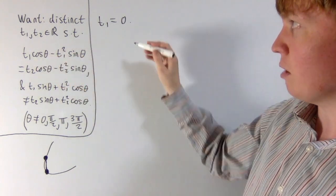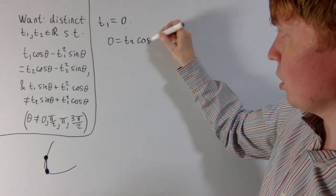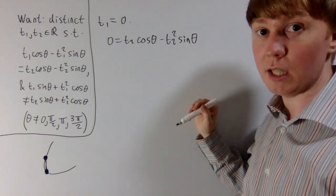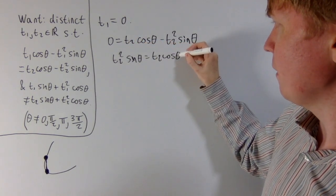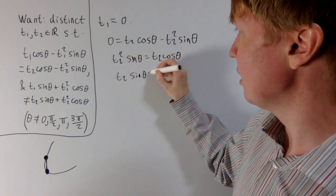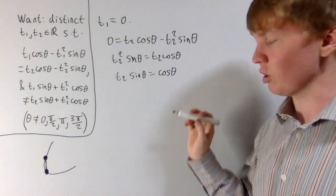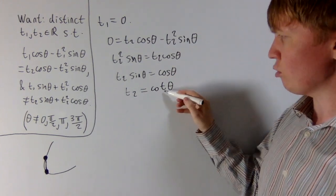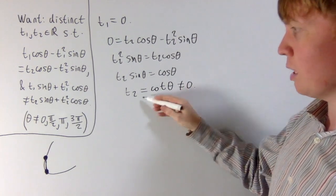The real part for t2 must also be zero, so we need t2 cos theta minus t2 squared sin theta equal to zero. Solving: t2 squared sin theta equals t2 cos theta. Since we want t2 not equal to zero, we divide by t2 to get t2 sin theta equals cos theta, then divide by sin theta — which is valid since we excluded theta equals zero and pi — giving t2 equals cos theta over sin theta, i.e., cot theta. Note that cot theta equals zero exactly when theta is pi over 2 or 3 pi over 2, so those cases are excluded too.